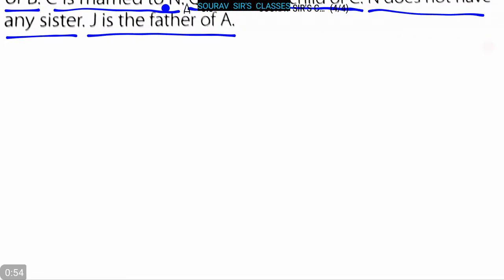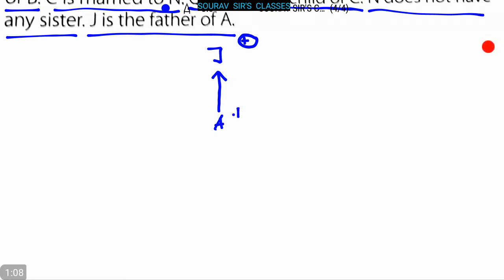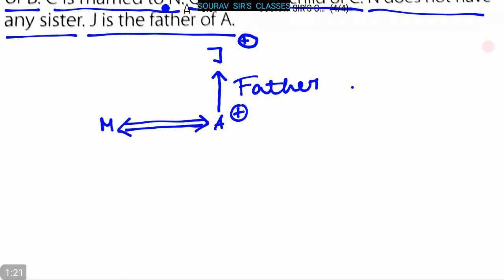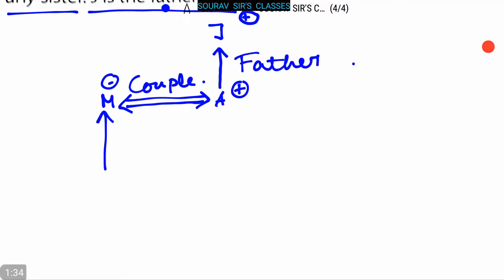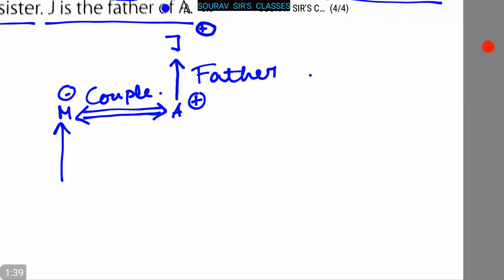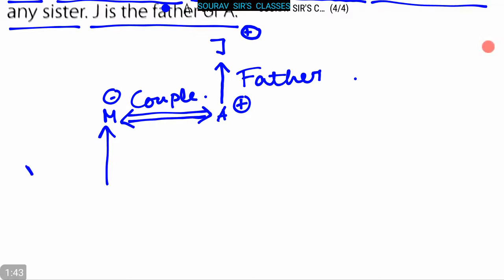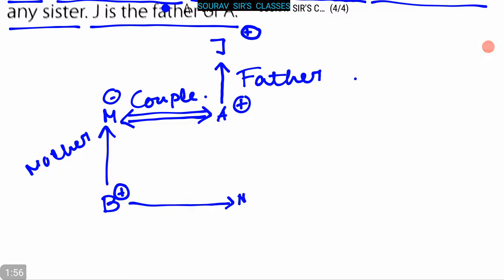Now let's make a relation diagram on the basis of this information. J is the father of A — J is male, so we denote him accordingly. A is placed here, with the father relation shown. M and A are married to each other, so they are a couple. M is the mother of B, so B is their son, and N is the brother.